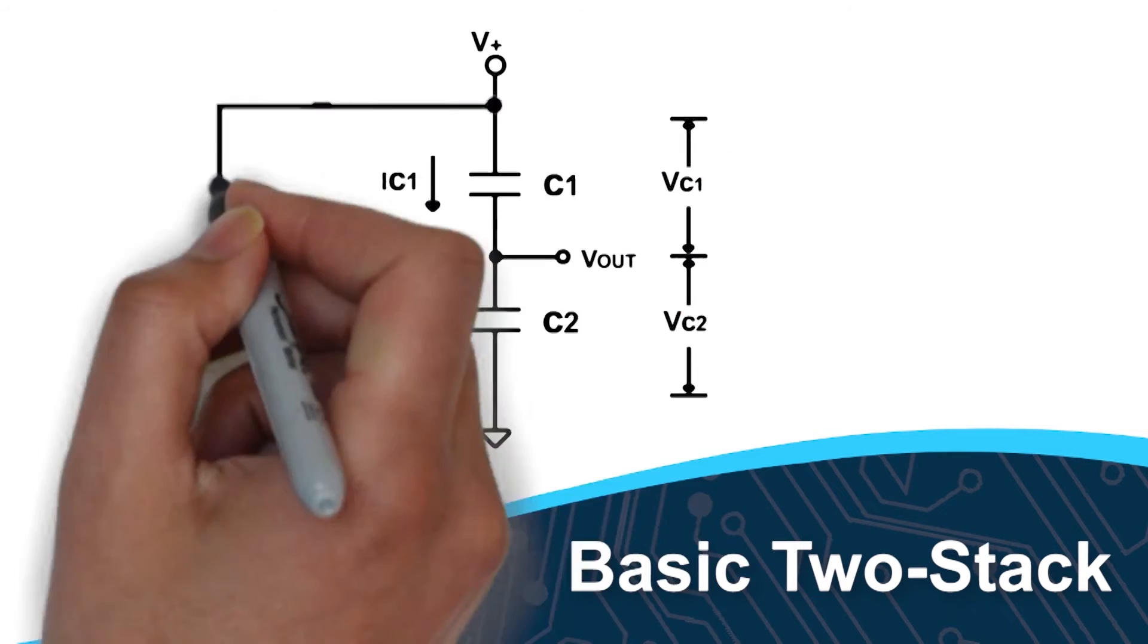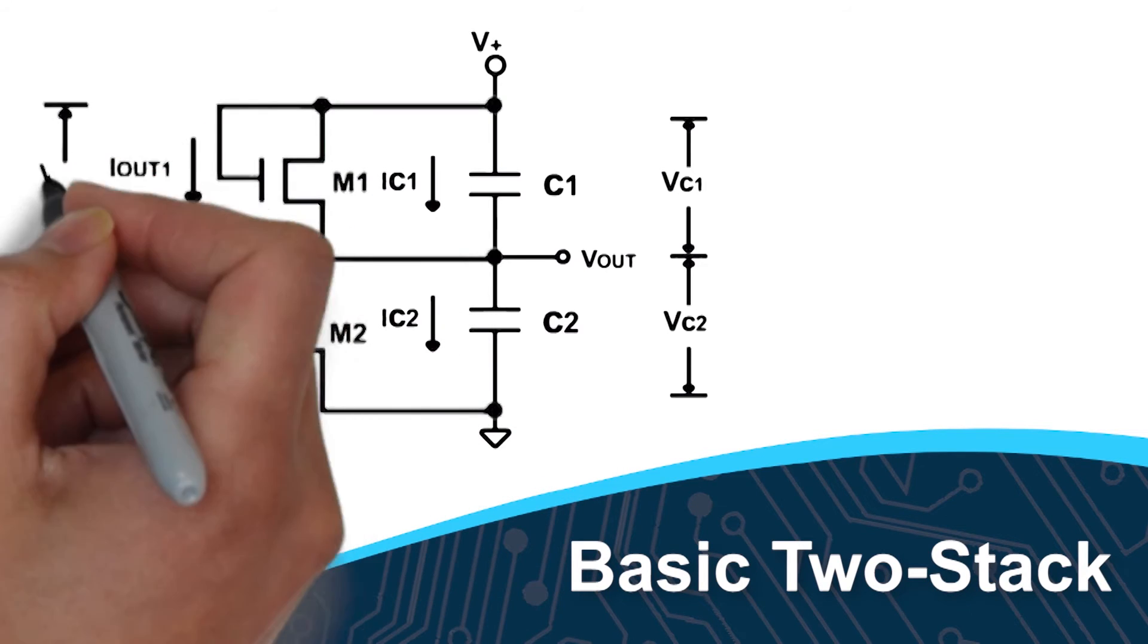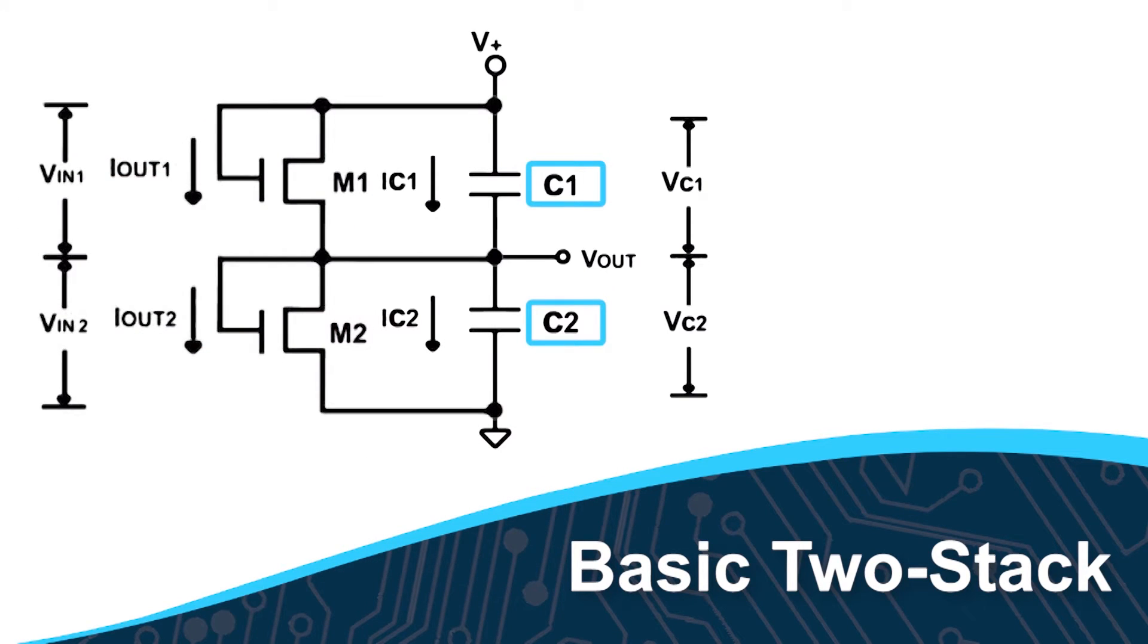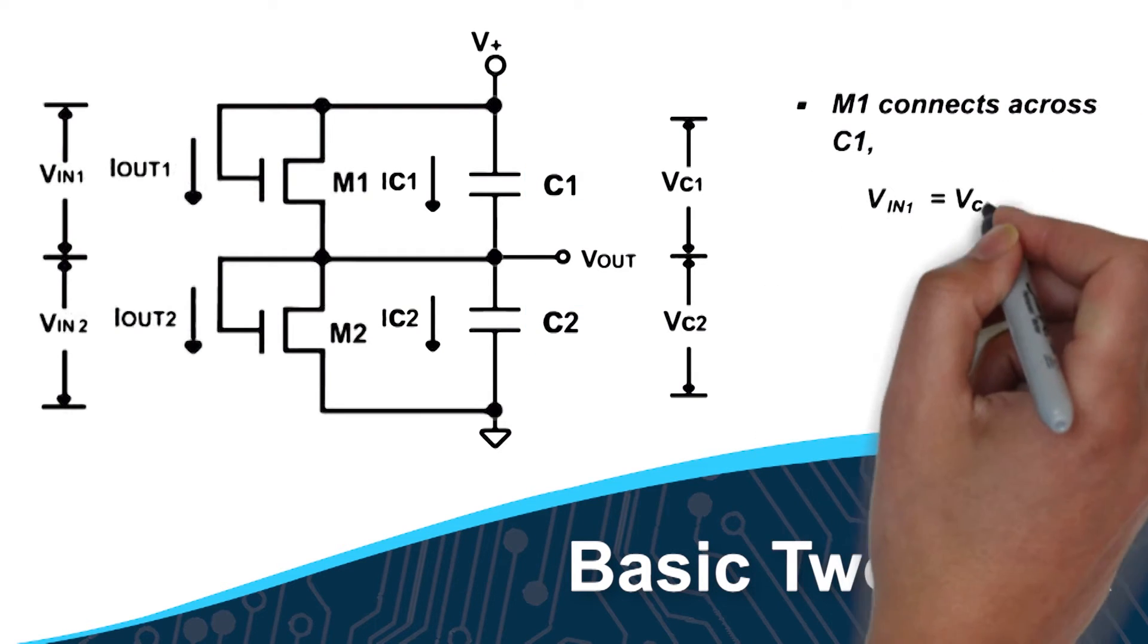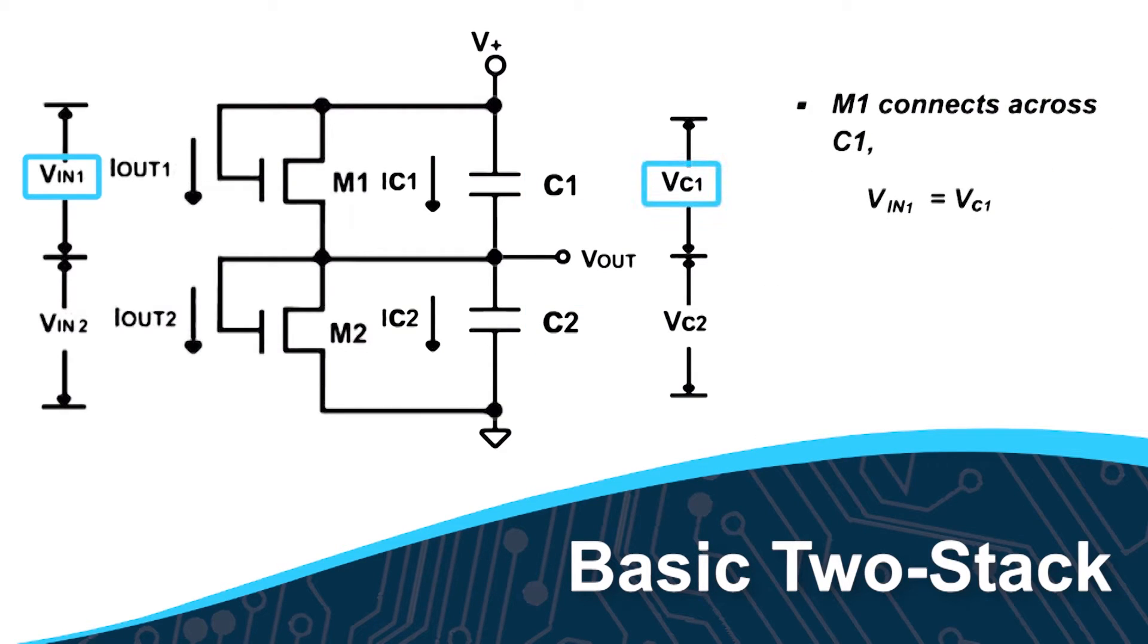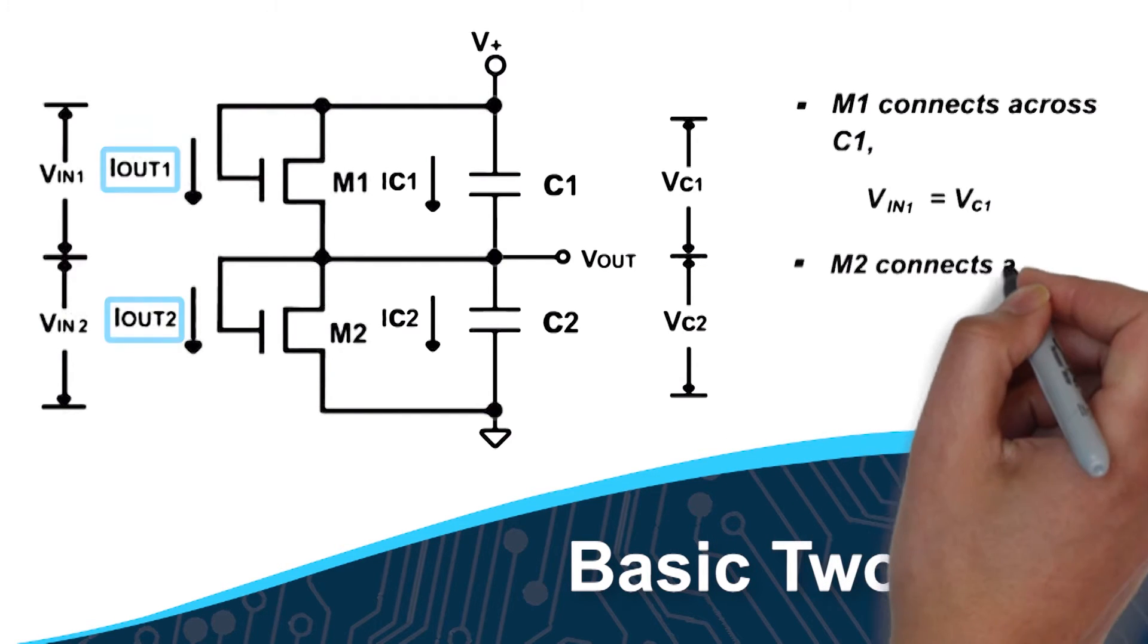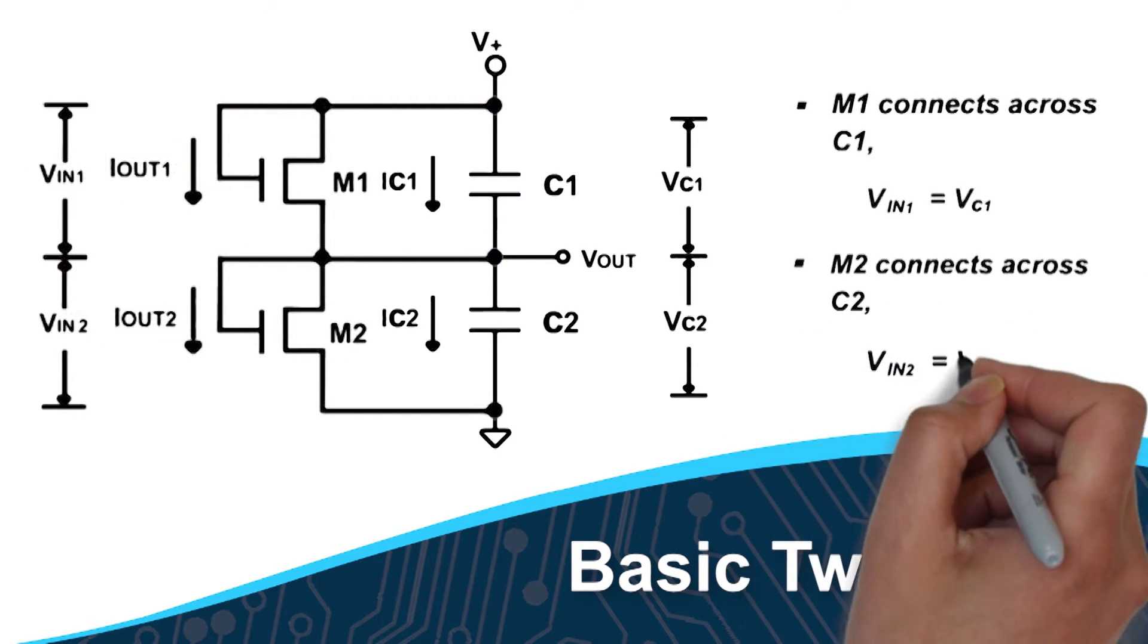In a basic two-stack circuit, a dual SAB MOSFET is placed across two supercapacitors. M1 connects across C1 so VIN1 equals VC1, and M2 connects across C2 so VIN2 equals VC2. Leakage current is going through each MOSFET, but you're unable to determine which supercapacitor has higher leakage.